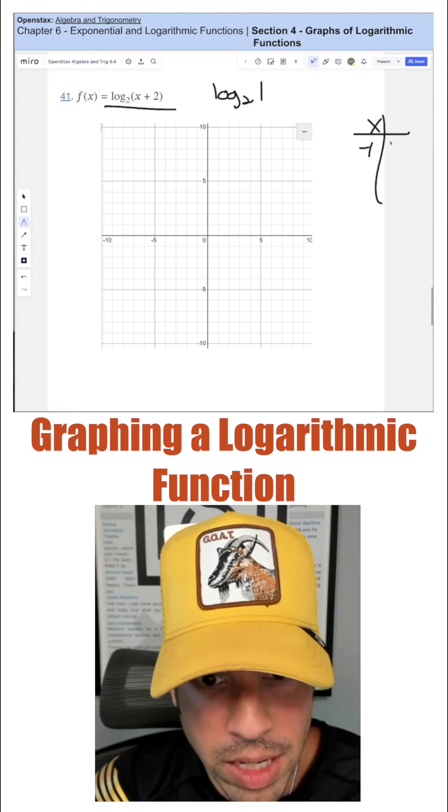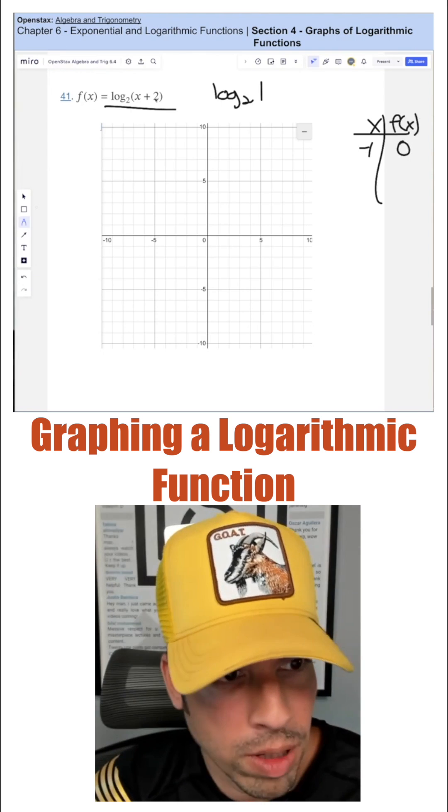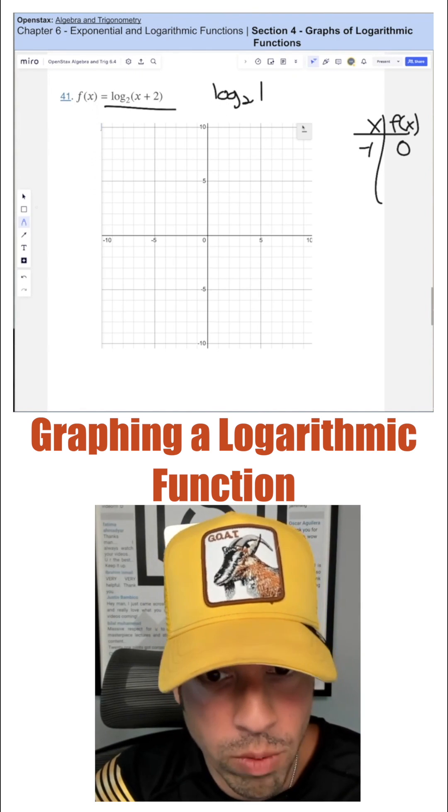Log of one, regardless of the base, is always gonna give me a function value of zero. So that means when I plug negative one in, I'm taking log base two of one, which is zero.